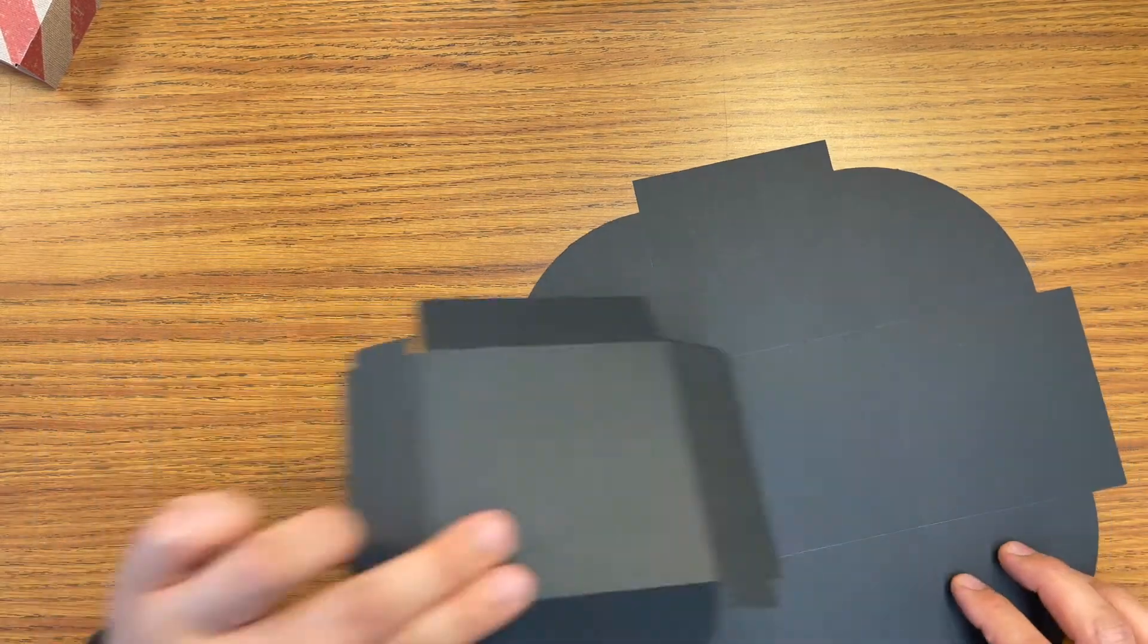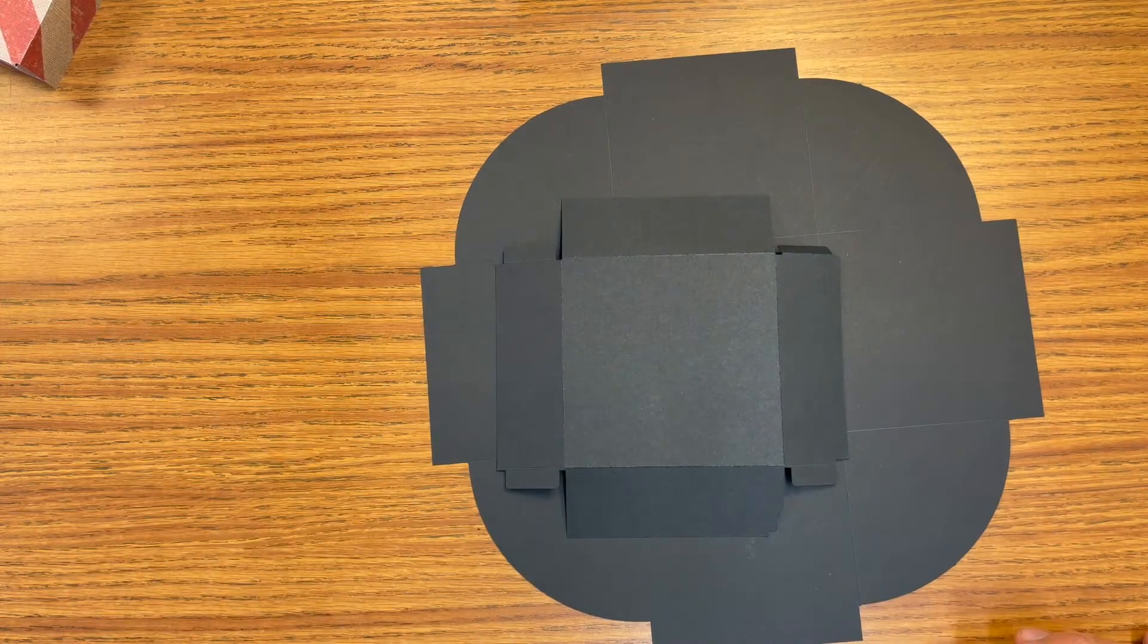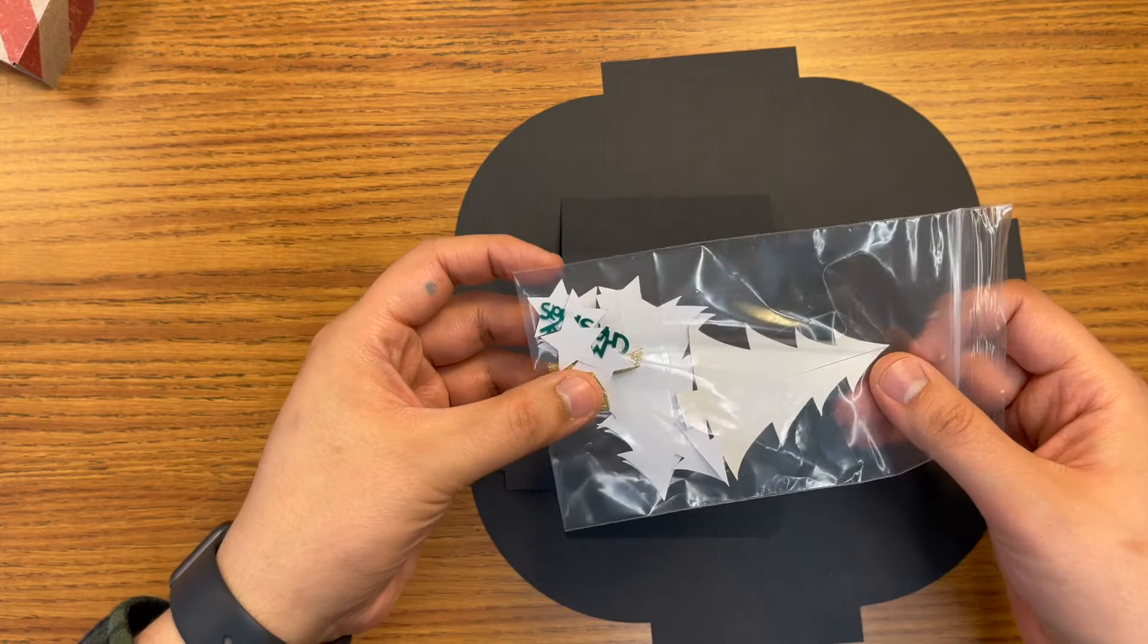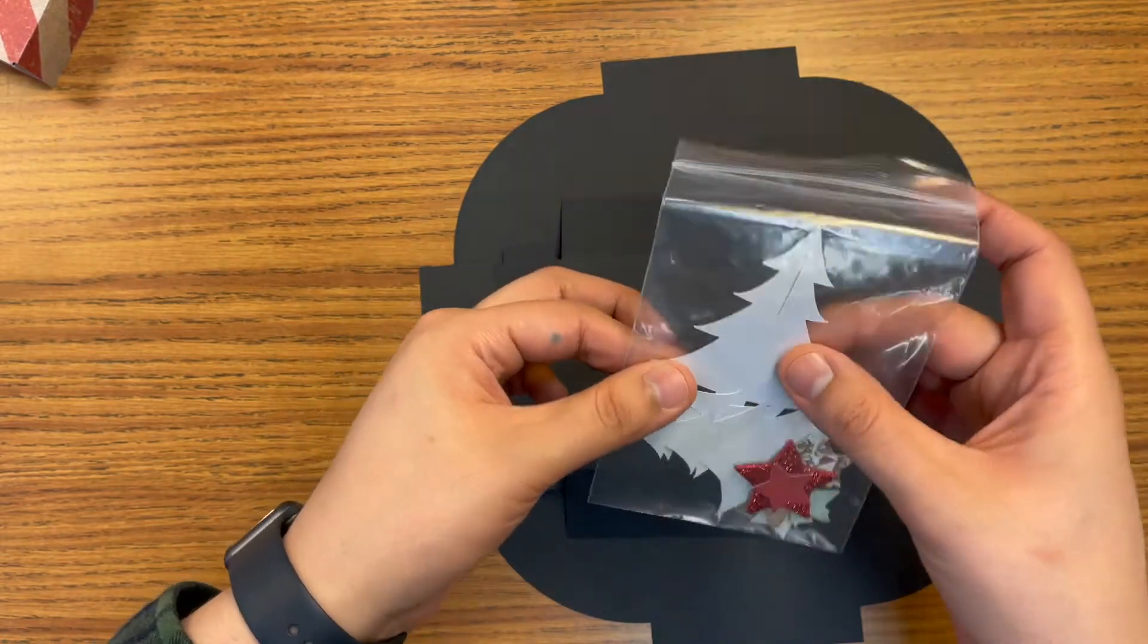Move that out of the way. So in the kit, you will be getting the pieces necessary to make the explosion box. And you will be getting a little baggie of embellishments like some stars, some bows, a little Merry Christmas confetti, and some tree cutouts.